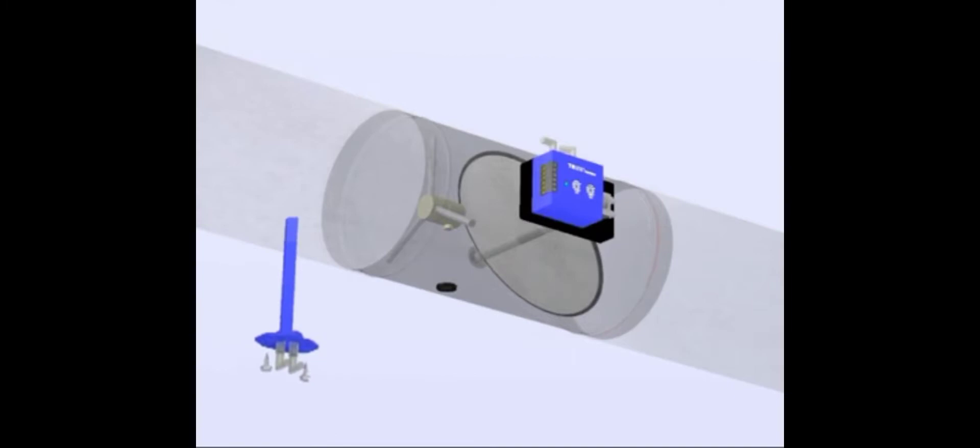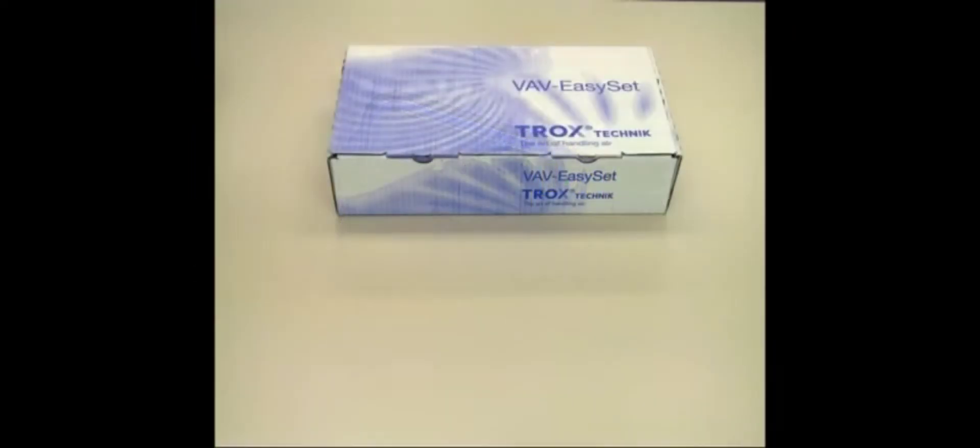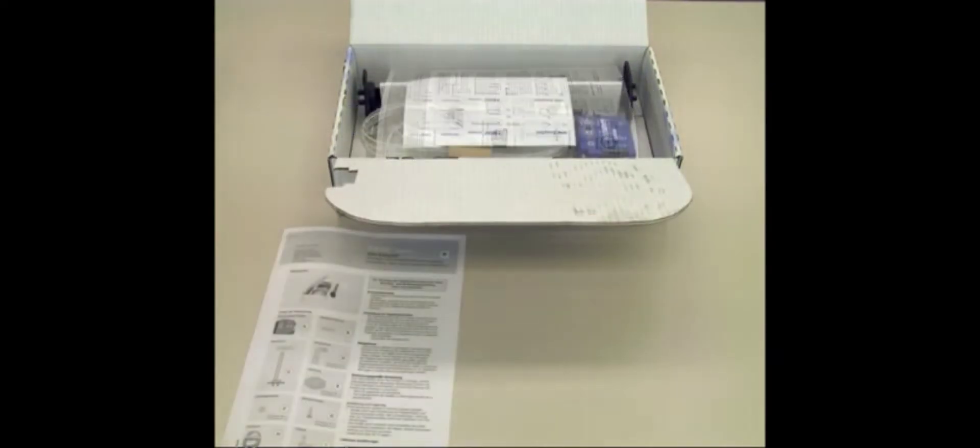Trox VAV Easy-Set is an assembly with control components for refurbishing volume flow terminal units. The Easy-Set assembly is supplied in a package and is suitable for systems with circular ductwork.